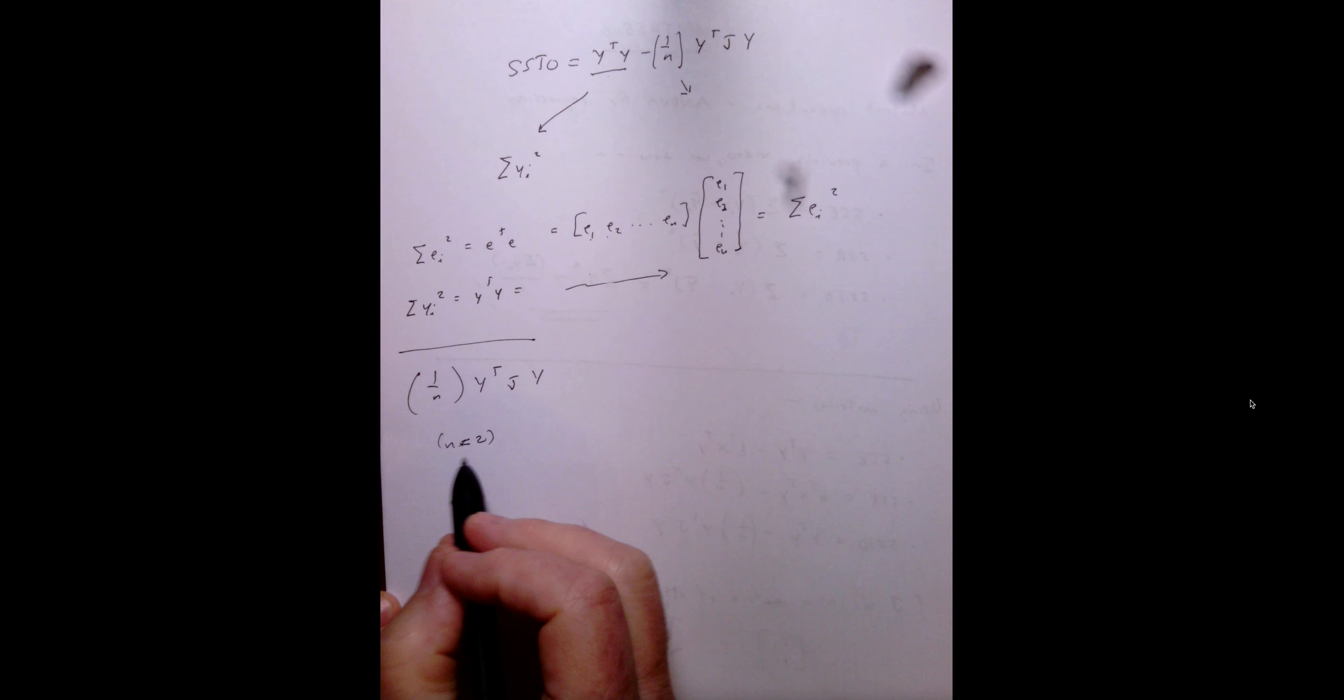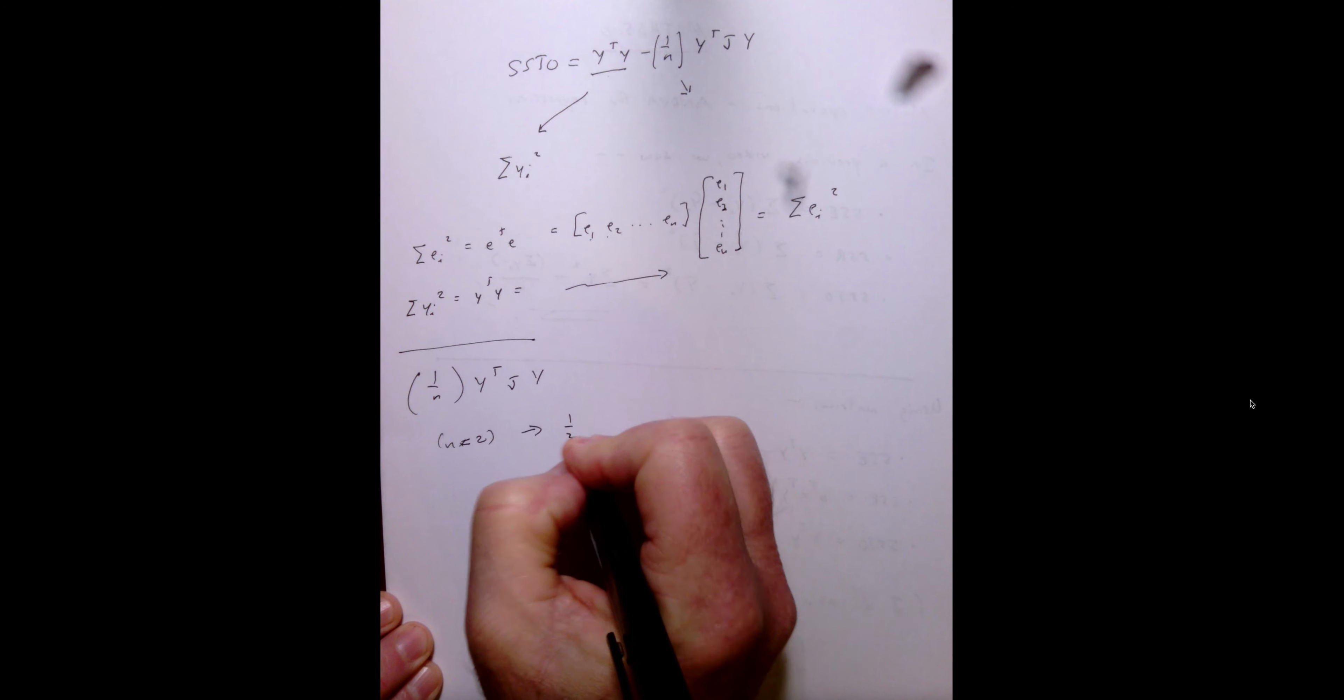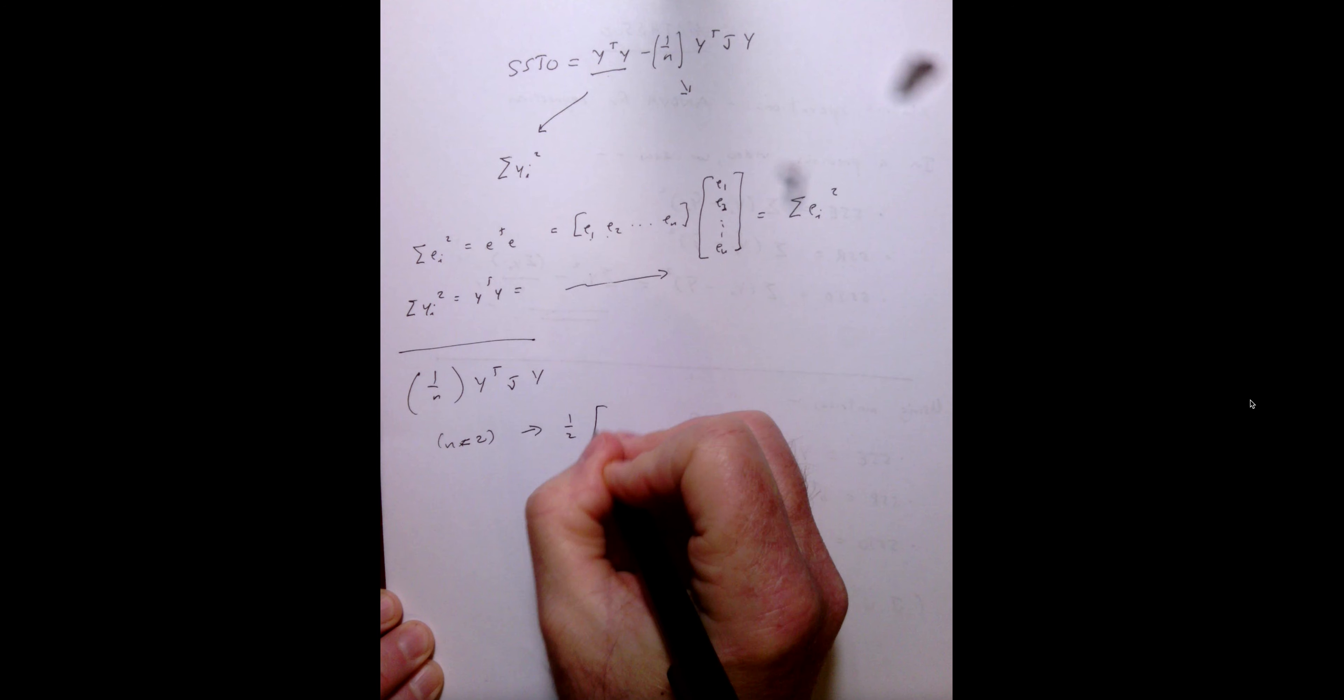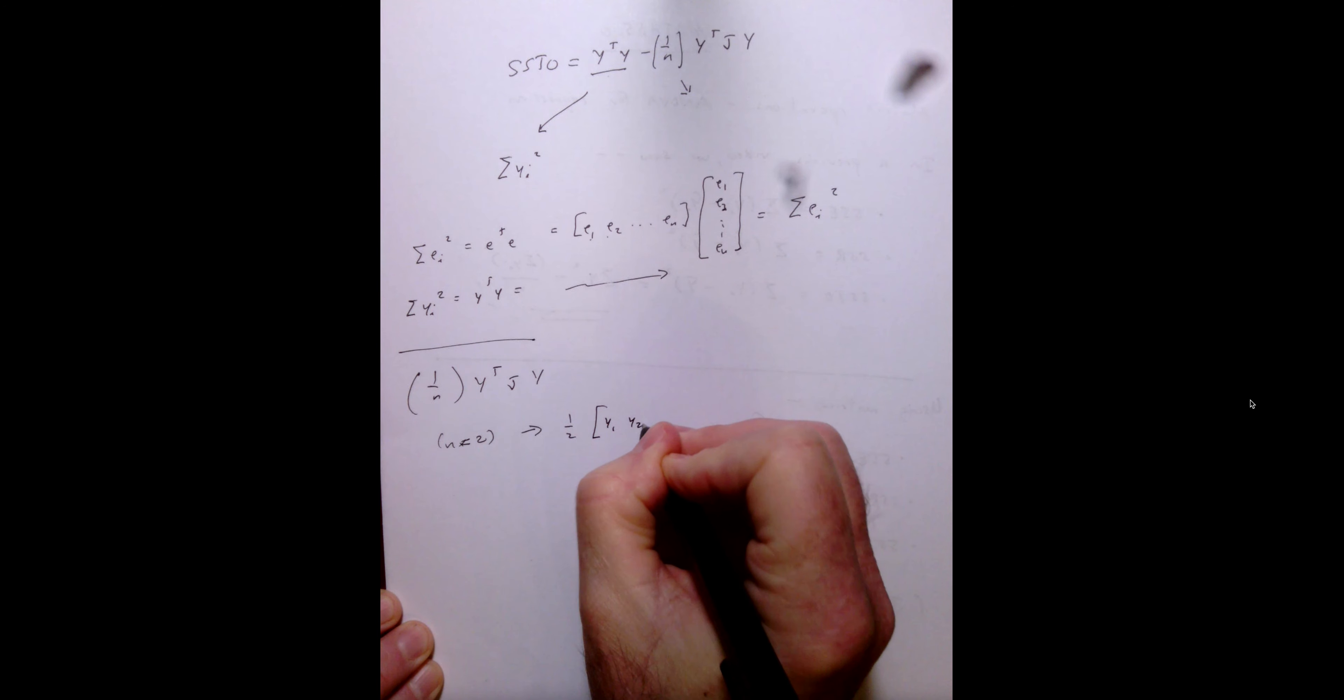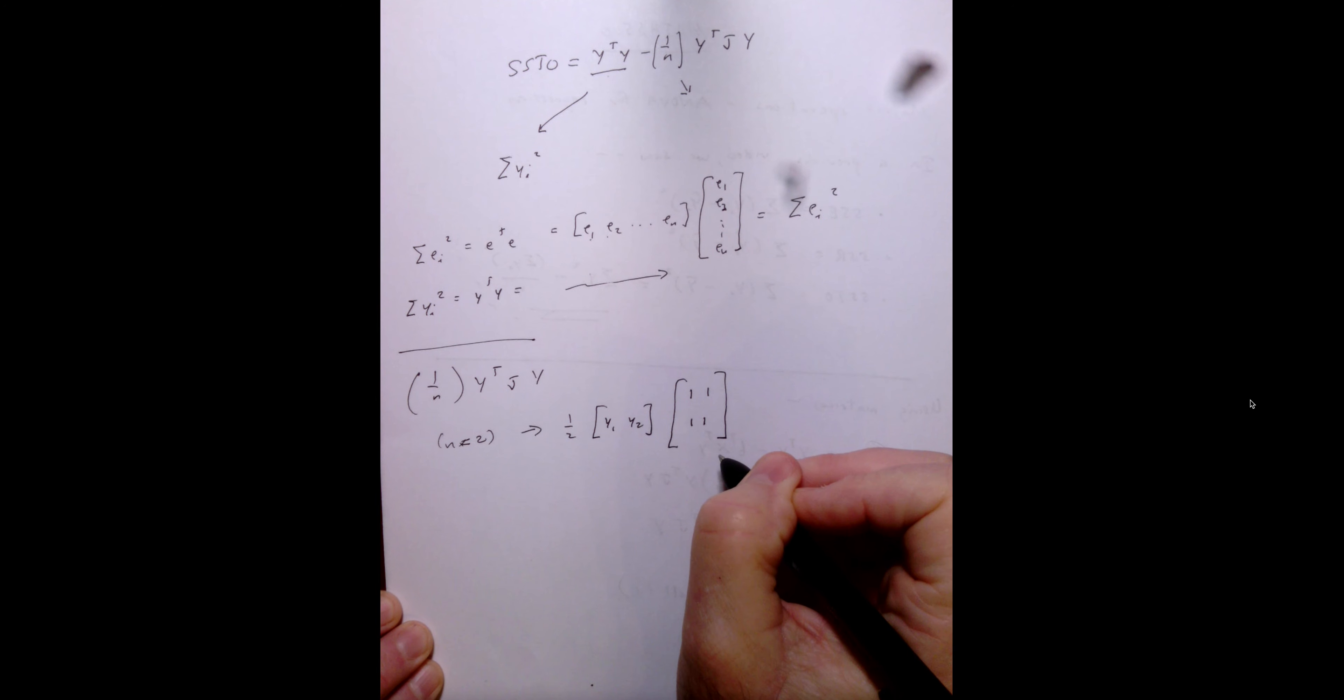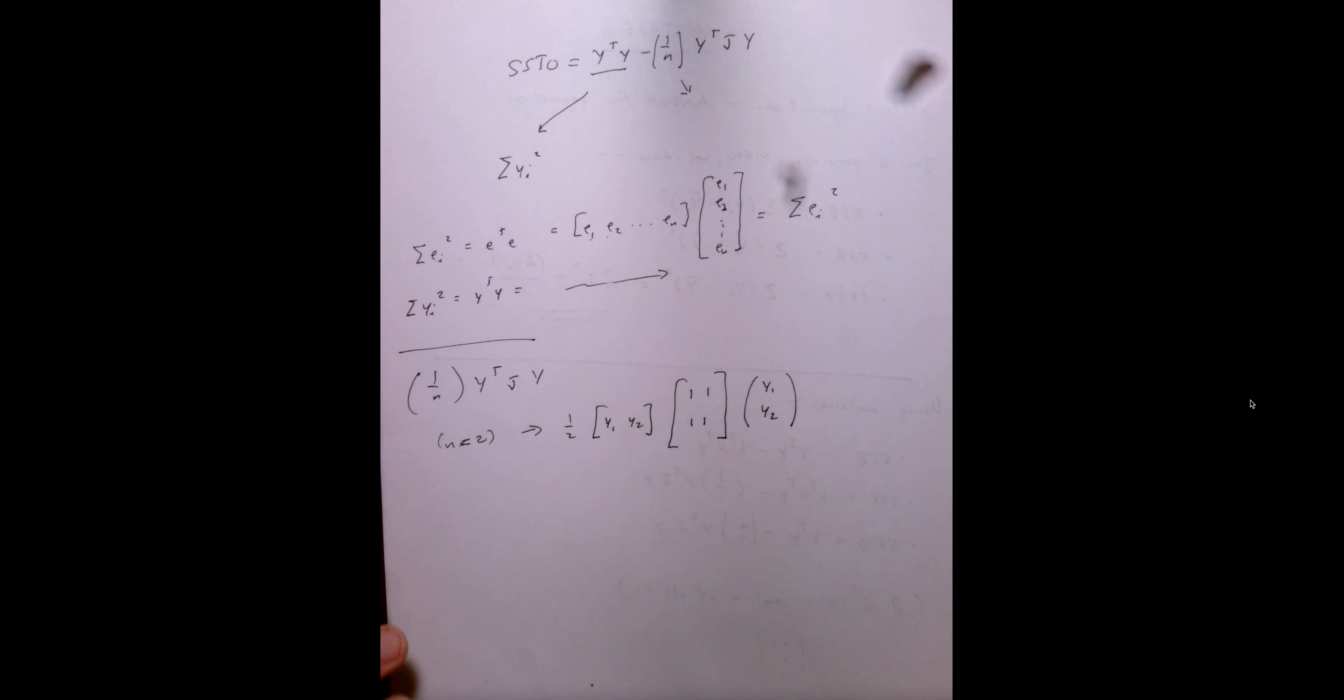It clearly can be generalized, n by 3, n by 4, and so on and so forth. So, if we take a look at for n by 2, we're going to have 1 half. If y transpose would look like y1, y2, the J matrix is just going to be, as we discussed previously, a 2 by 2 of all 1s, and then our response vector is just y1, y2.